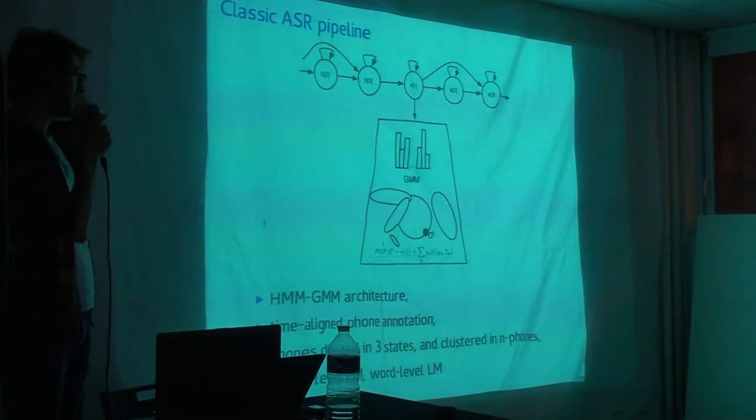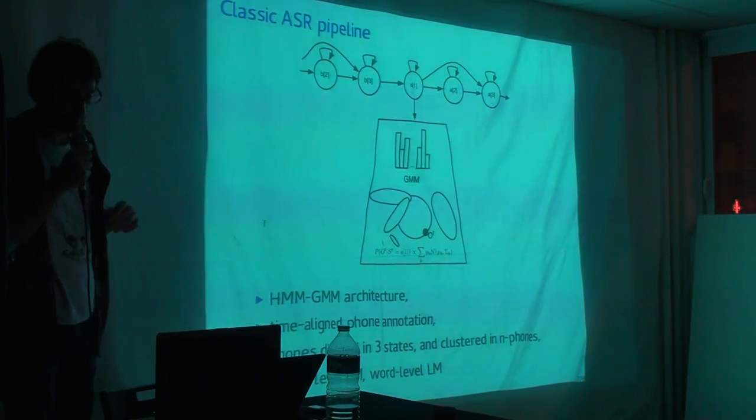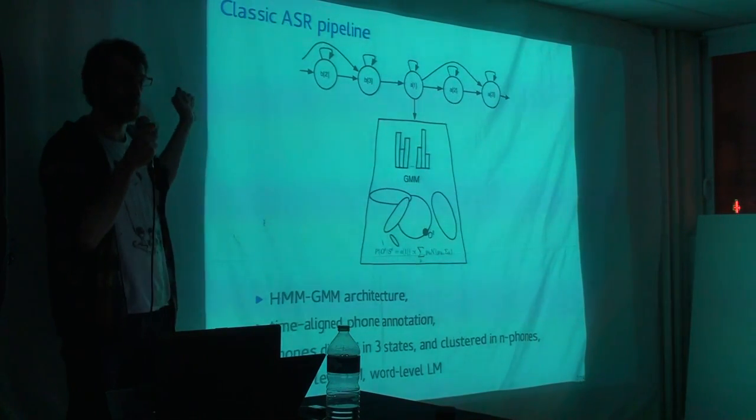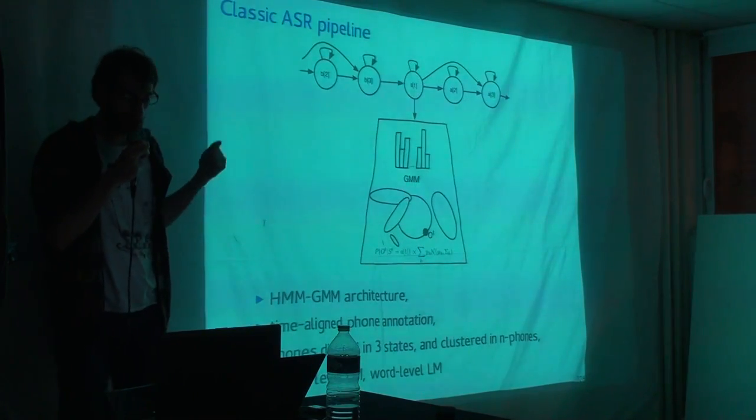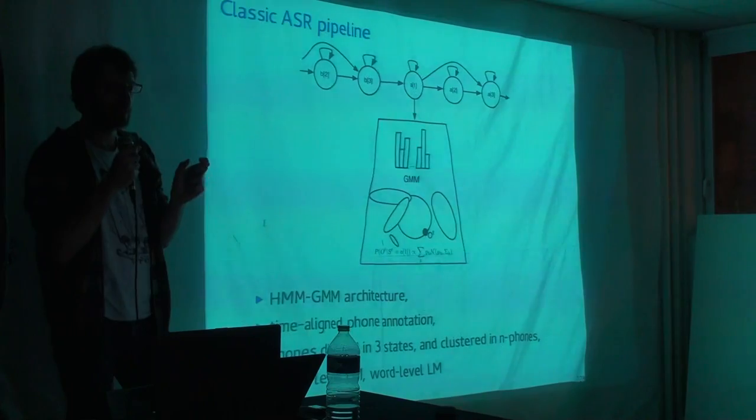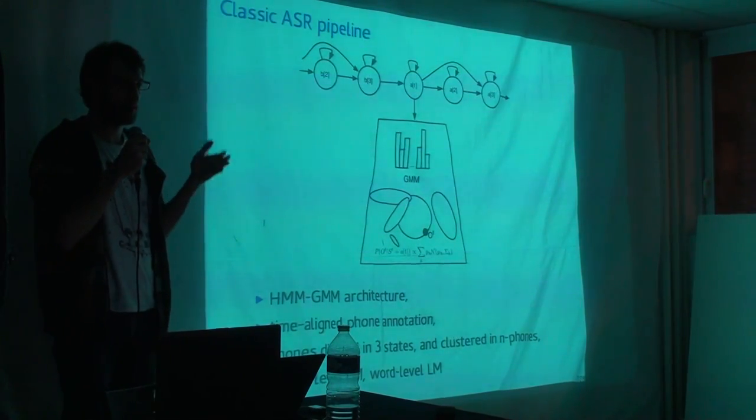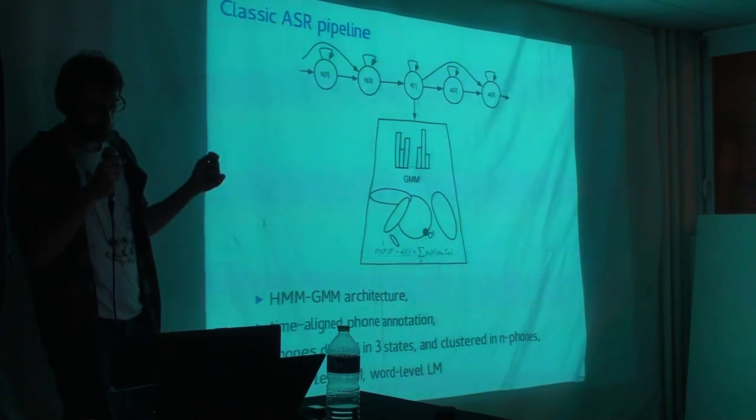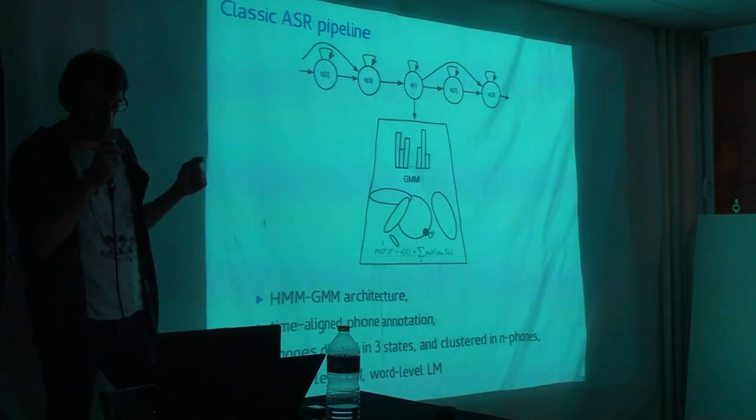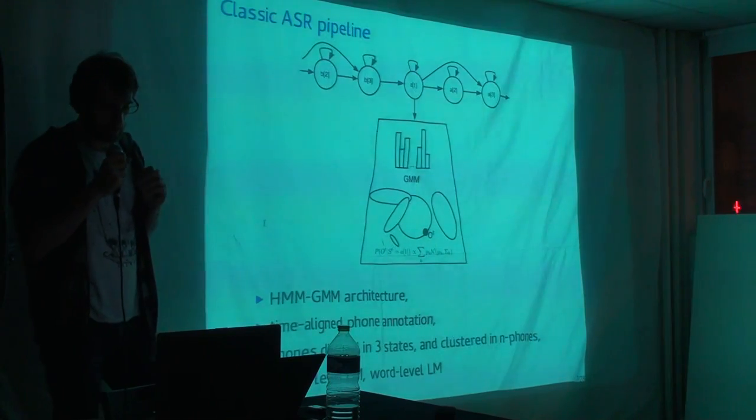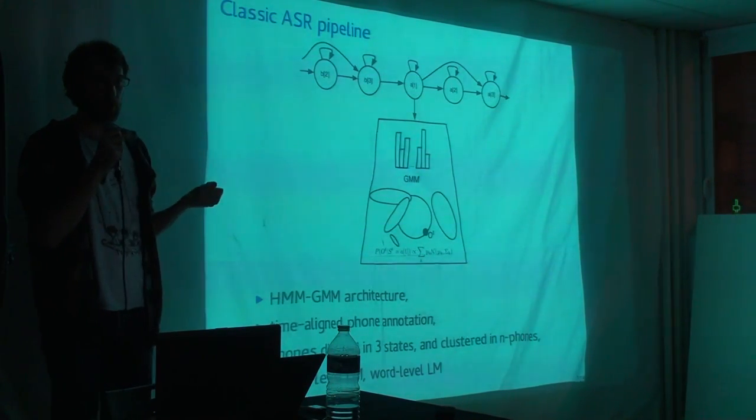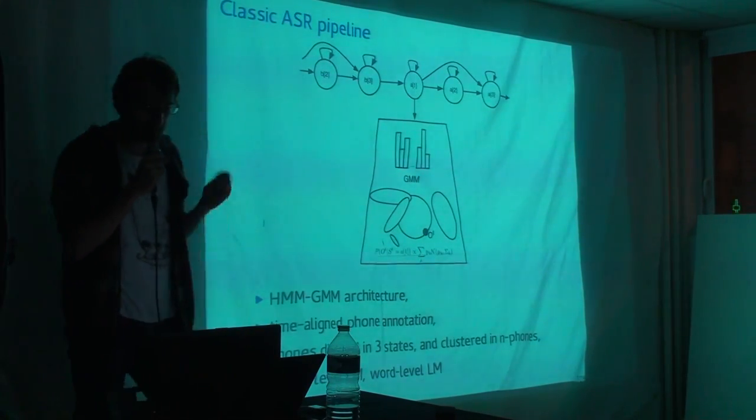So the classic pipeline for speech recognition until 2008, 2009 was to do HMM-GMMs. So what does it mean? It means you do a hidden Markov model. Maybe some of you are familiar with hidden Markov models I guess, with a Gaussian mixture model as an emission process. So what does it say? It says that you have a Markov chain on the phone state. So each phone is split into three states: a beginning, a middle and an end. And so you have transitions between these phone states that form a Markov chain. And from this Markov chain you have an emission. And the emission is a mixture of Gaussians in the feature space that we have at the beginning. So that's how we train ASR models for the past 20 years.